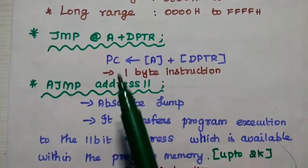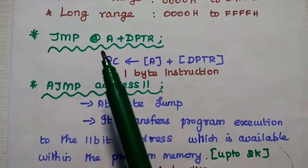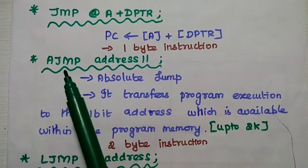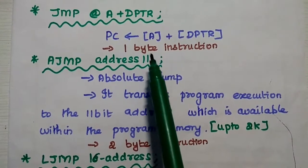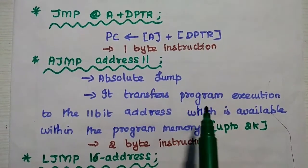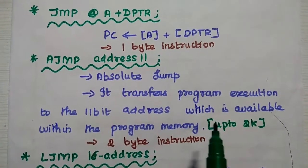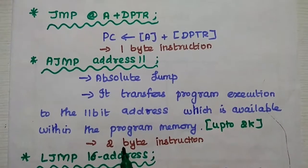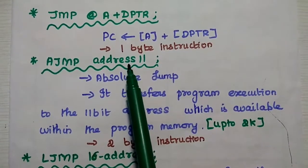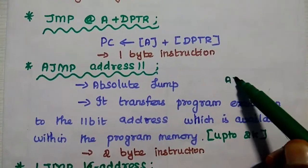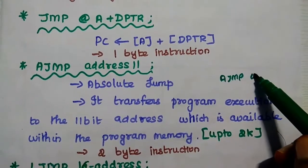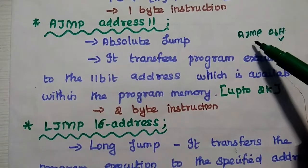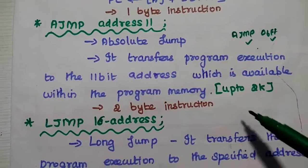JMP is a single byte instruction because it represents only the opcode. The next instruction is absolute jump, represented as AJMP address11, where 11 means it uses 11 bits. It transfers program execution to the 11-bit address available within program memory. The range is up to 2000 memory locations. It is a 2-byte instruction — for example, AJMP 06FFH — consisting of the 11-bit data and the opcode for AJMP.